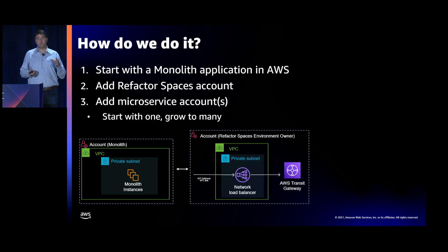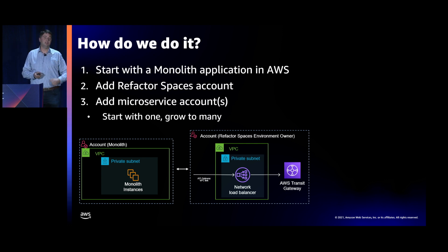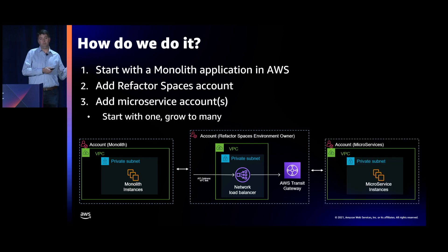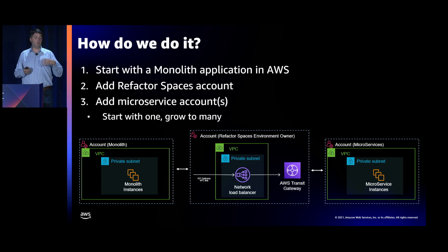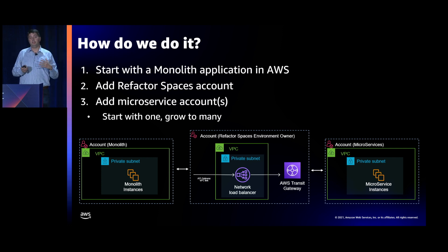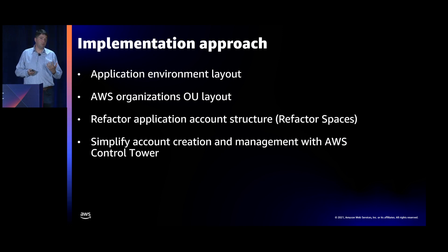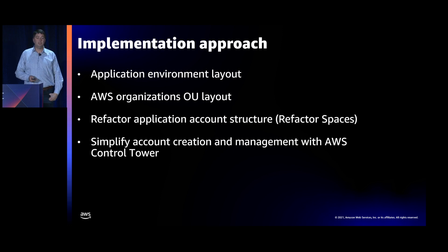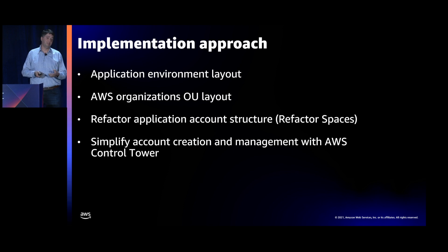We need an implementation approach. First, we'll talk about splitting the application into different accounts. Then how we're going to organize those accounts into OUs. We're going to use OUs to apply policy and guardrails. And then how to simplify all of this using AWS Control Tower. We start with a monolith in an account — we may have multiple accounts across different SDLC levels. It already has a support structure and a team. We build an account specific for that application and that level of SDLC to route that traffic — this is your first account you're building for Refactor Spaces. Then you start building multiple microservices accounts, chiseling them off.